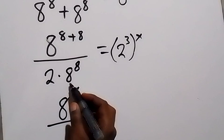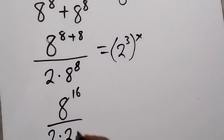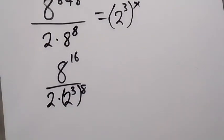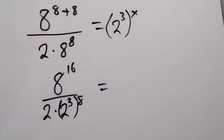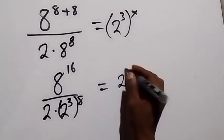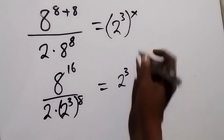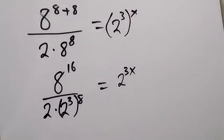We can also change the denominator to base 2: this is 2 times 2 raised to power 3, then raised to power 8. The right-hand side equals 2 raised to power 3, then raised to power x, which gives us 3x when the powers are multiplied.